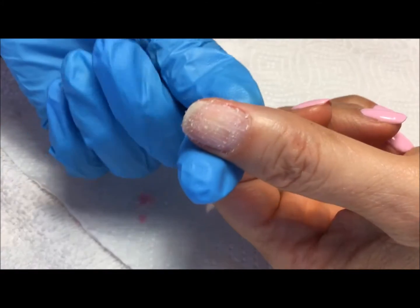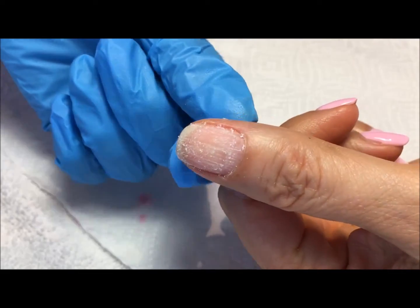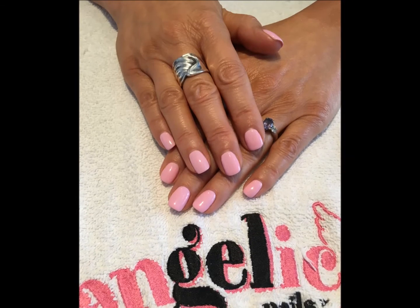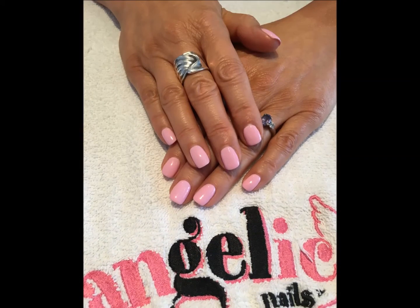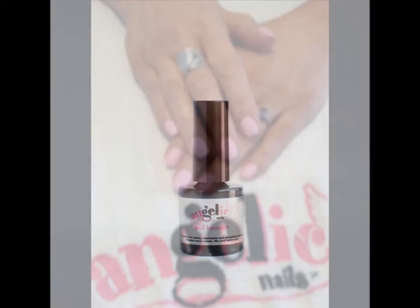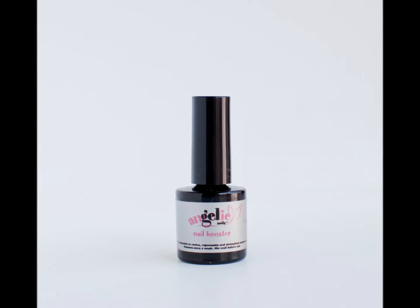After all Easy Soak Gel Polish has been removed, wash the hands and proceed with nail preparation to apply a fresh set of Easy Soak Gel Polish. If you do not want to reapply gel polish, proceed with Nail Booster application instead.